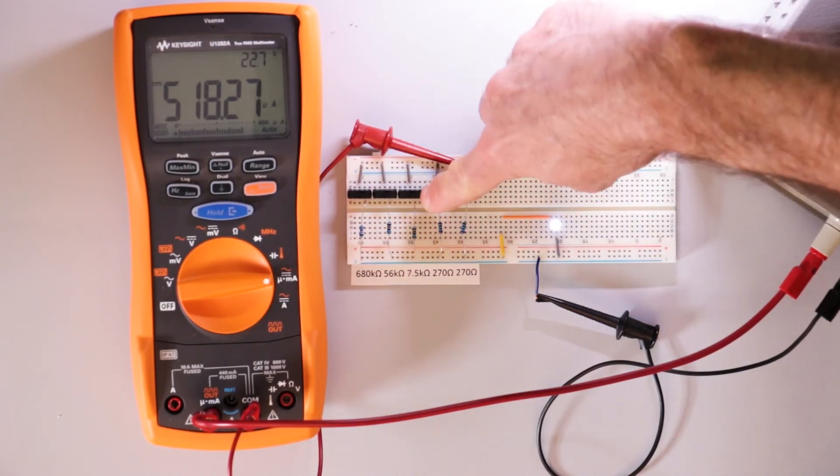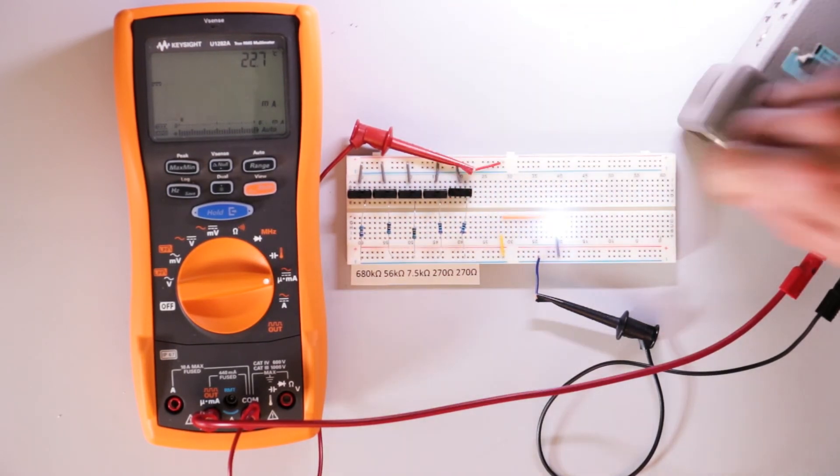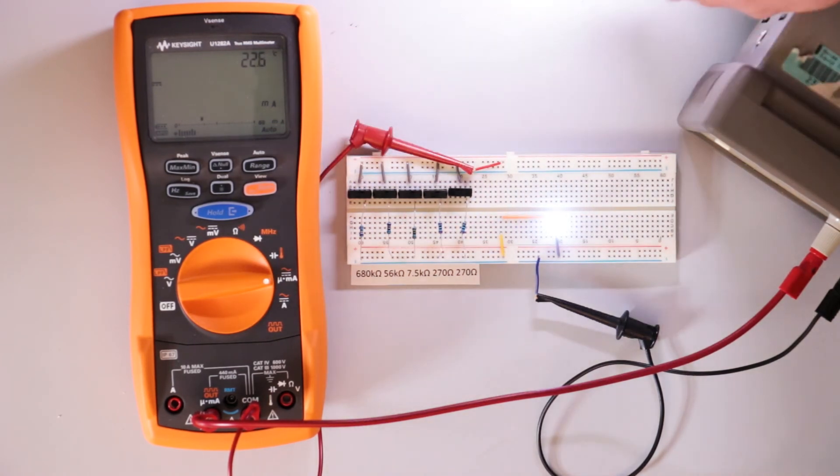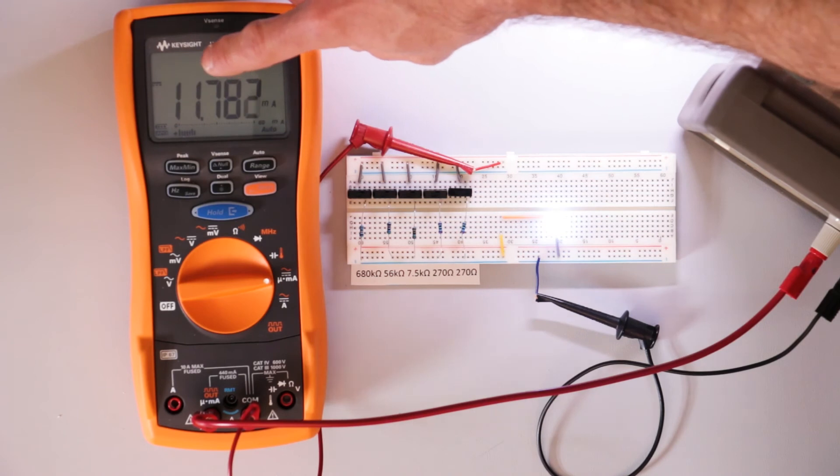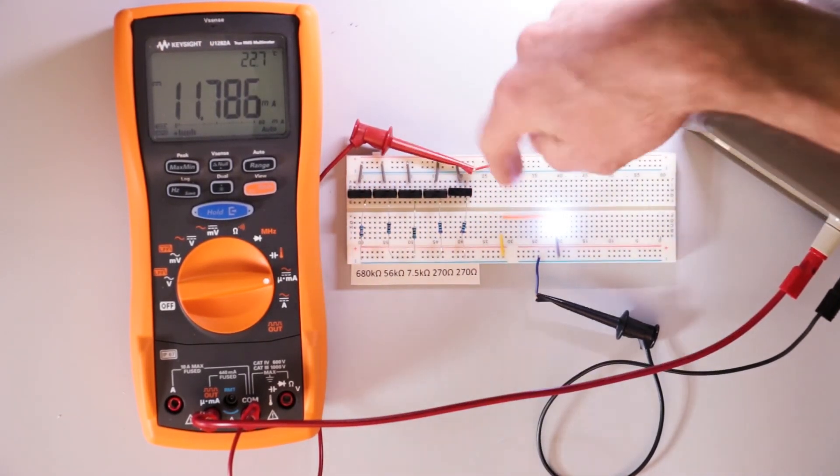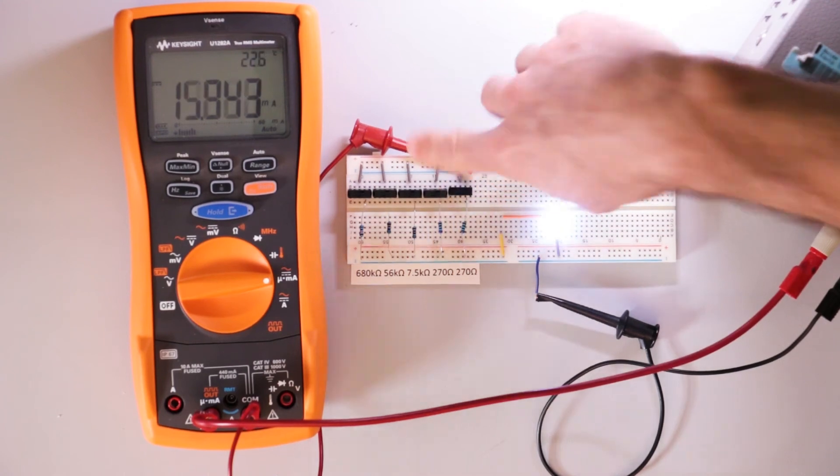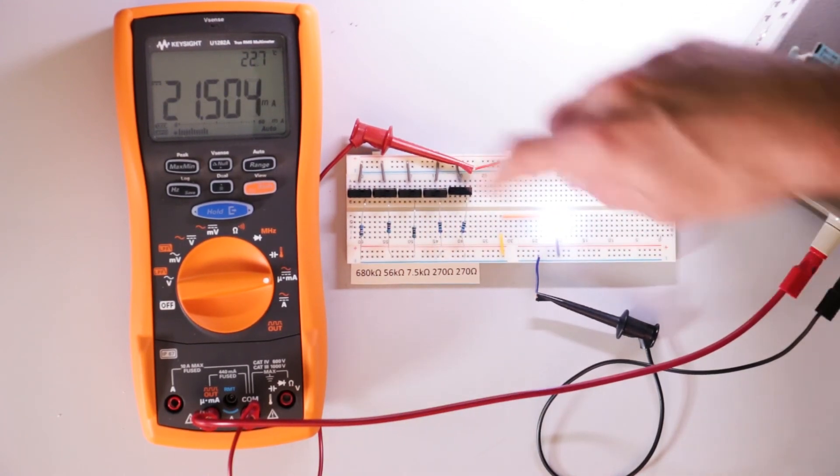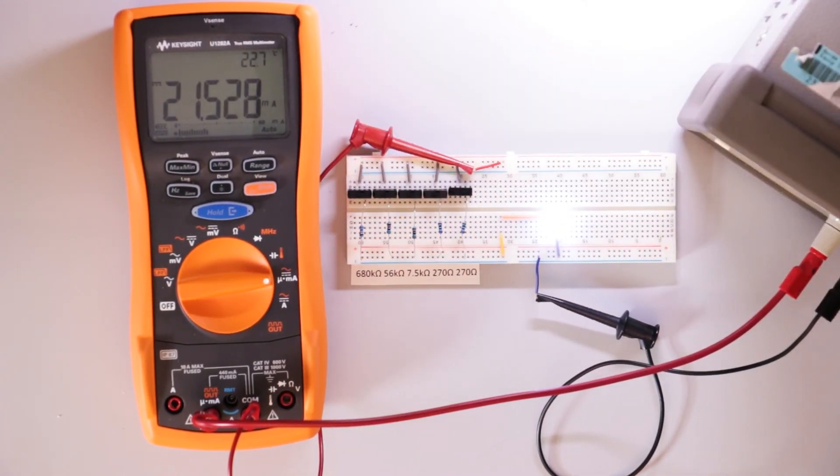And then we'll put the 270 ohm in parallel. So a lot brighter now. Give this time to do its magic. So 11 milliamps now is flowing through these four resistors and the LED. And then the last one. Now the LED is much brighter. And we have about 21 milliamps flowing through the LED.